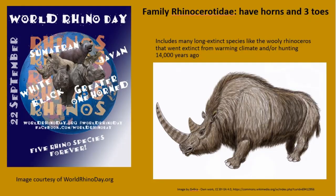Within that group is the family Rhinocerotidae — the ending '-idae' always means that's a family name. Compared to the other members of the order, they bear horns and they have three toes. So that includes these five species.